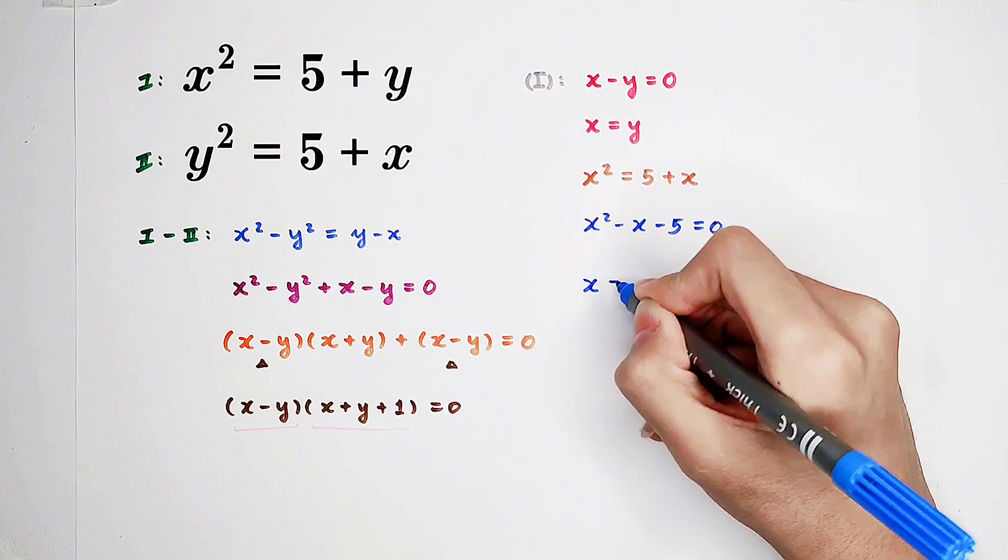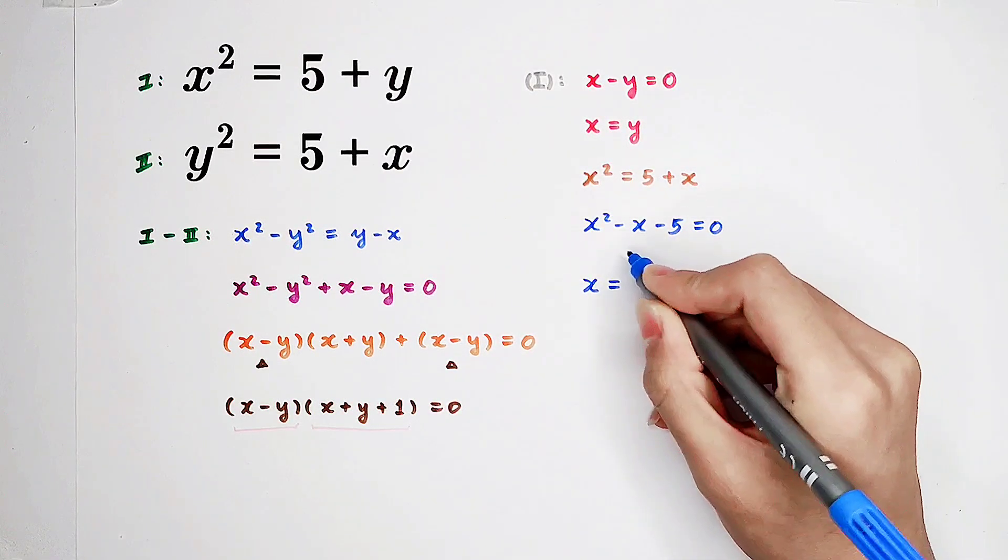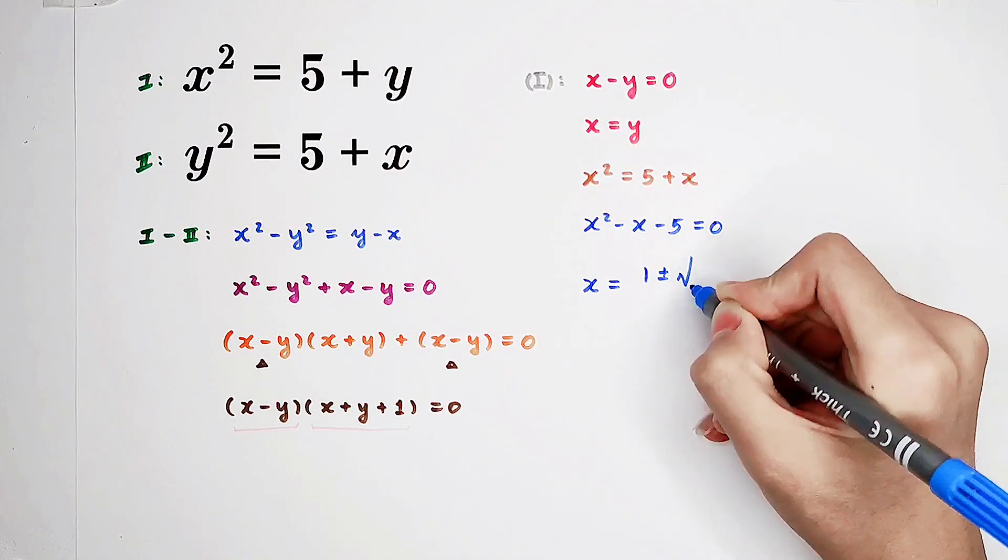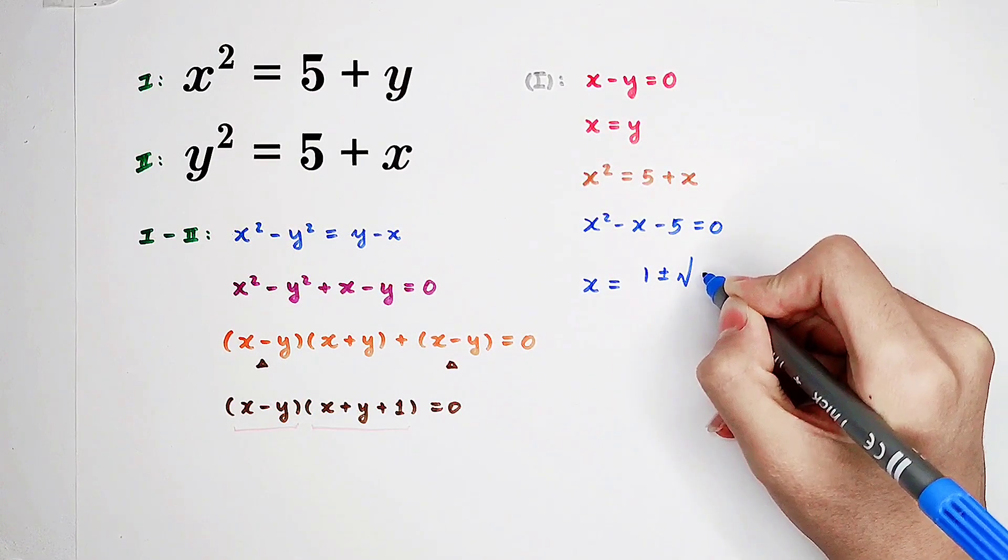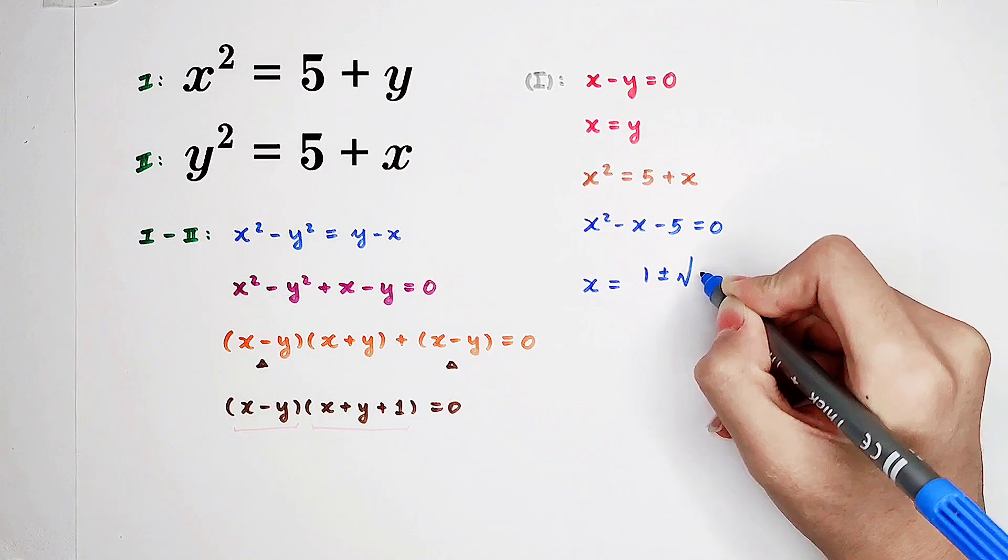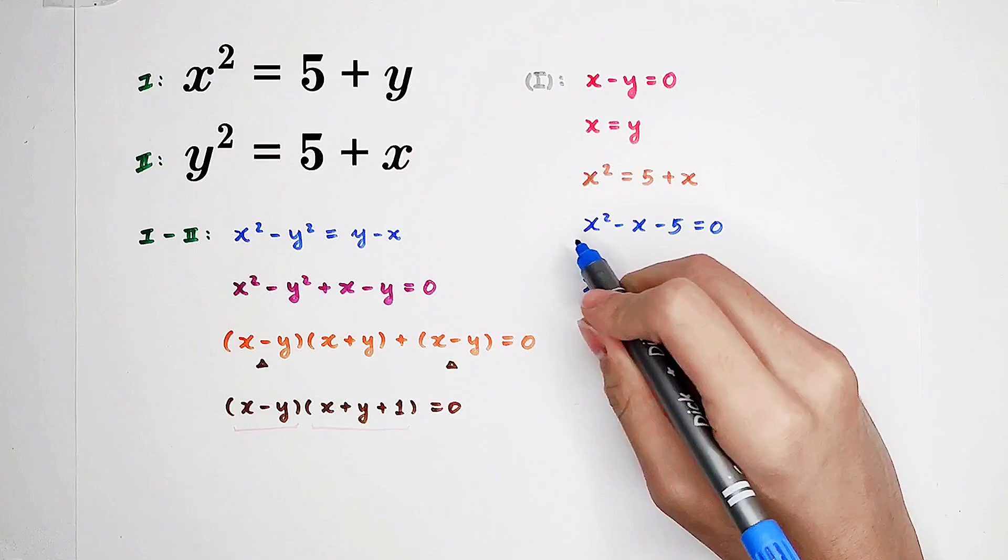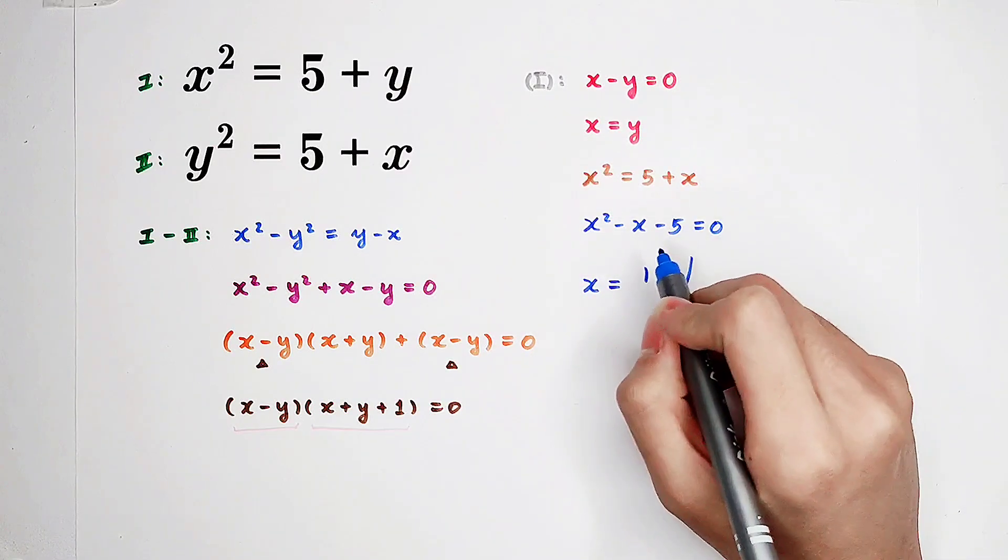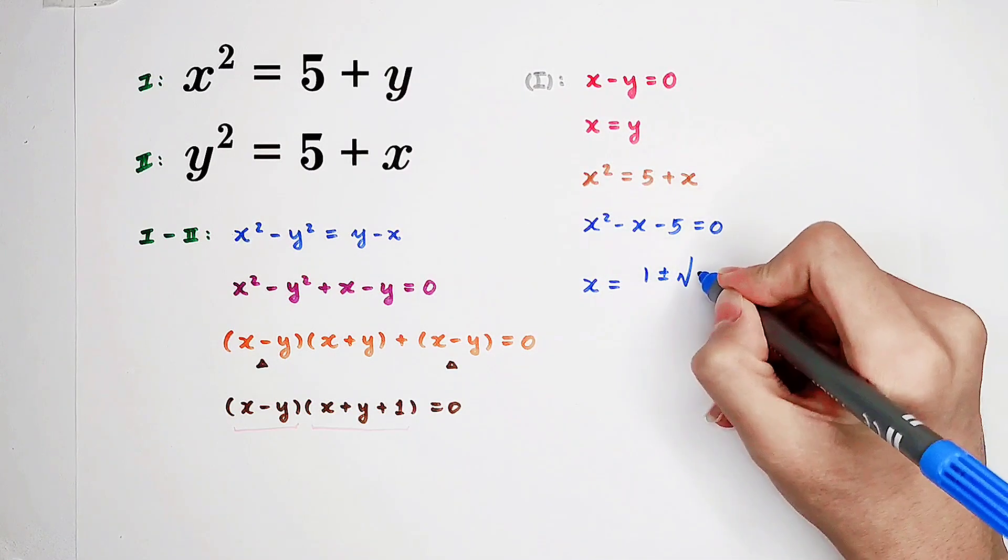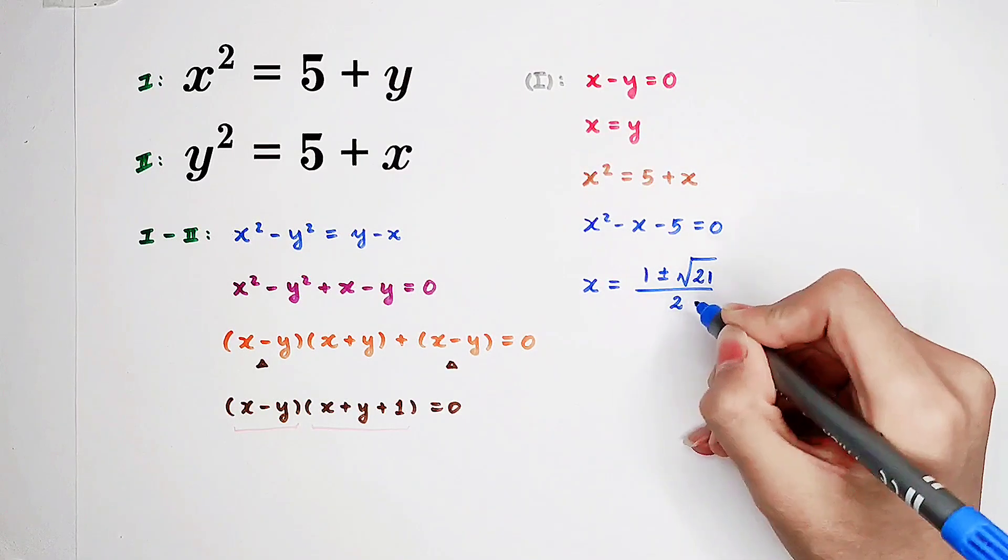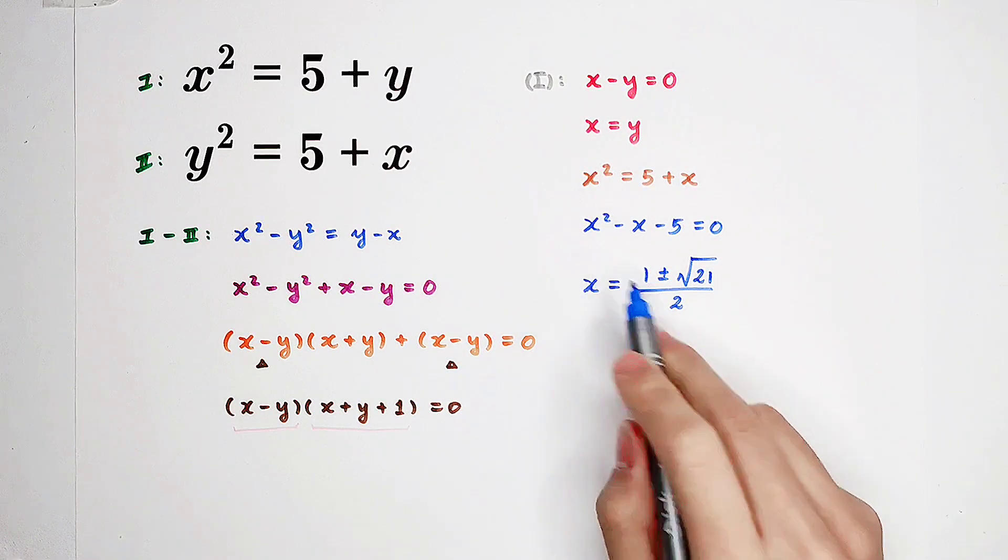x1, x2 are negative b is 1 plus or minus square root of b squared minus 4ac. That is, b squared is 1 minus 4 times 1 times negative 5. That is 1 plus 20, so that is 21. Then, over 2 times a is 2.